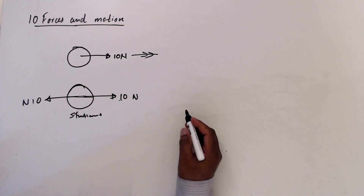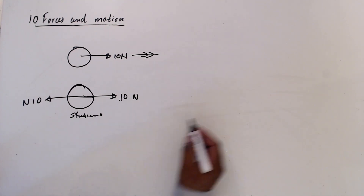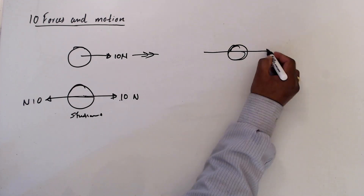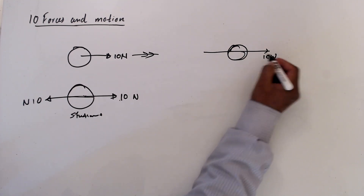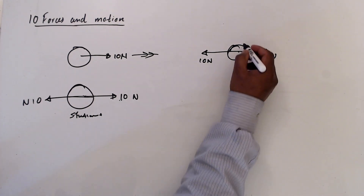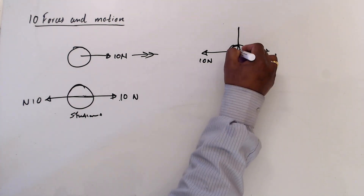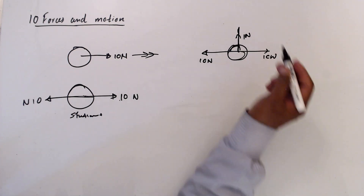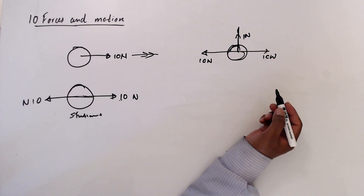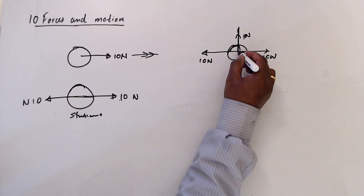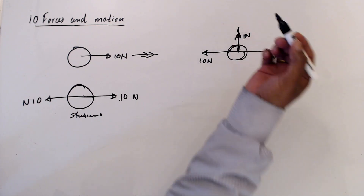Now for this one it has 10 Newton in this direction and 10 Newton in this direction, and I'll put 1 Newton in this direction. So which direction is this particle moving now? It is clear that the unbalance is here and it is moving in this direction.